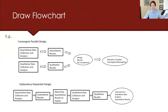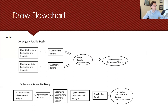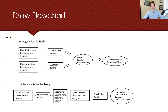You need to be able to draw your design in a flow chart. The first example is convergent parallel design: you collect and analyze the quantitative and qualitative pieces separately, look at those results, and then merge them to compare convergence and divergence. The second example is explanatory sequential design: you collect and analyze the quantitative component, make decisions based on what you found, use those to inform the qualitative data collection and analysis, get those results, and then meld everything together at the end.